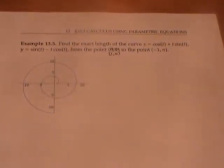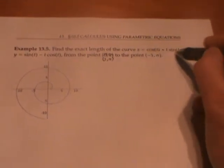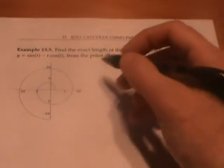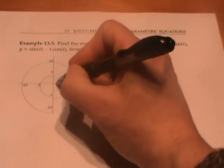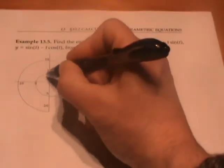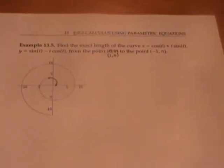Let's do an example where we use that formula to calculate the arc length of this spiral curve given by these two equations. We're going to find the length going from the point (1, 0) to the point (-1, π). This portion of arc length.